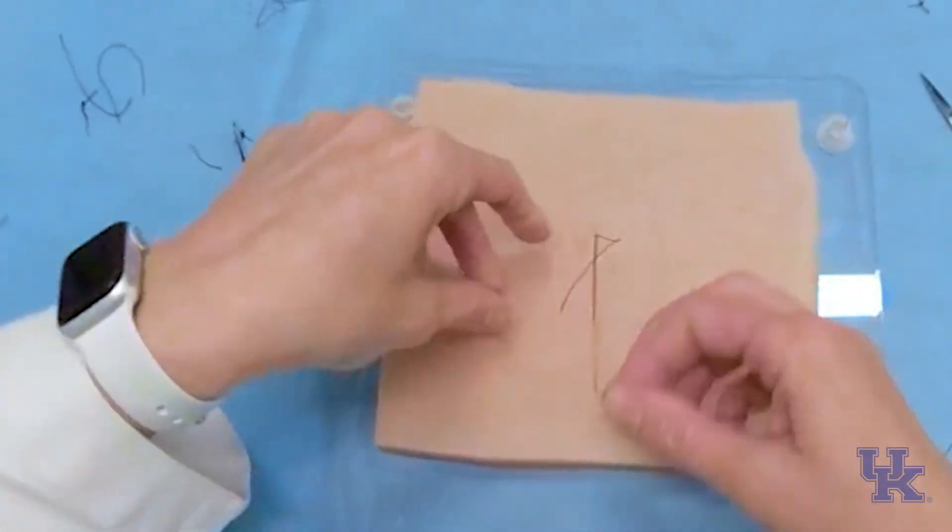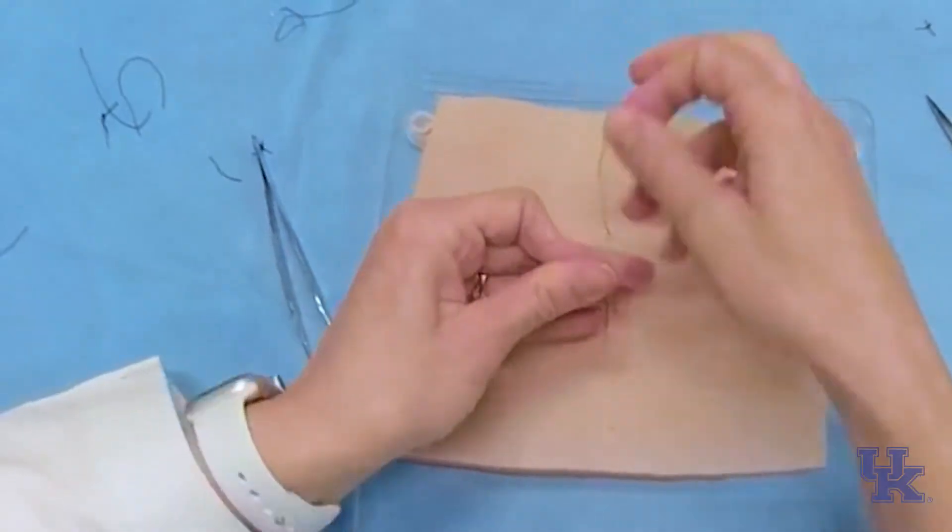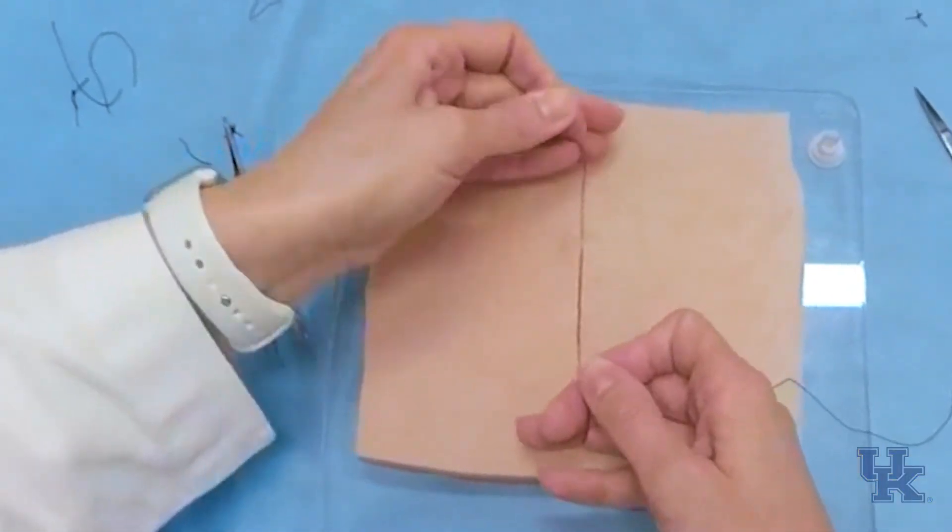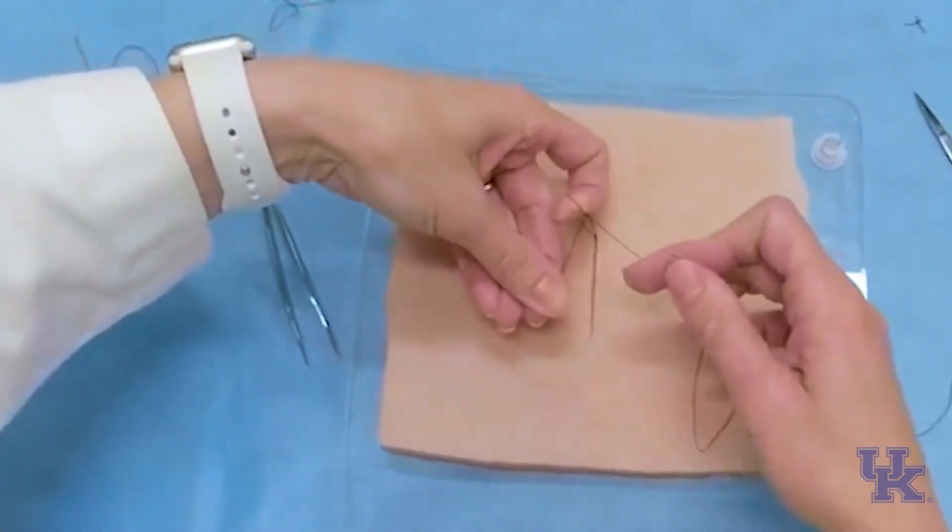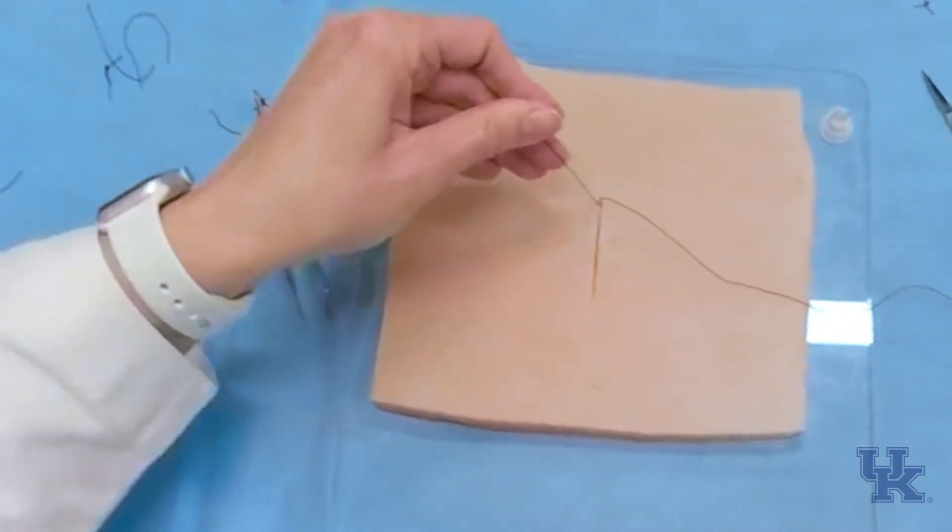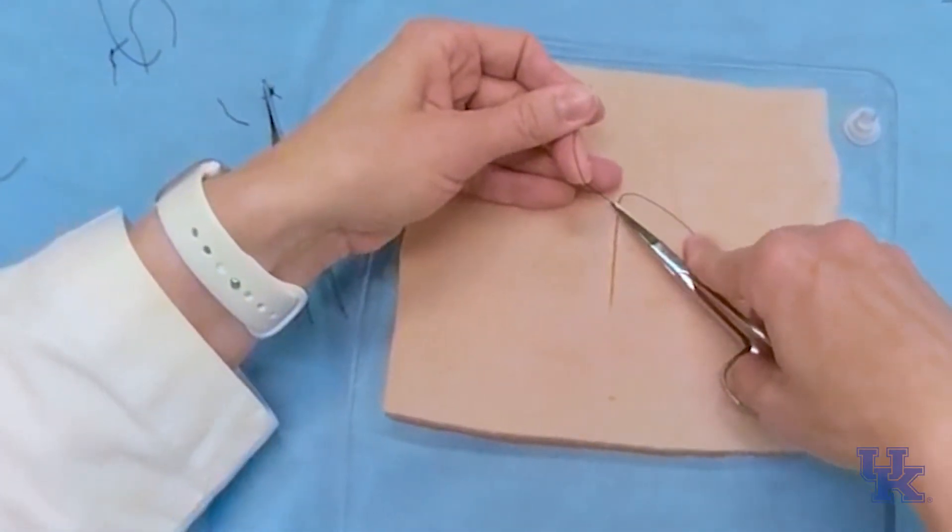Now if you were doing an interrupted, you would cut both of these sutures off, but since we're not doing an interrupted, we want to leave the needle end intact. So we're just going to cut the end without the needle.